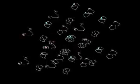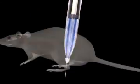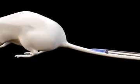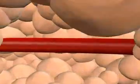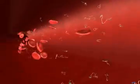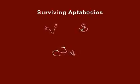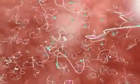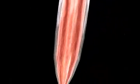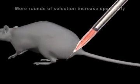Following recovery and purification, the surviving molecules are then amplified and administered to a healthy rat once again. Only the unbound or unabsorbed molecules within the bloodstream are recovered for continuous rounds of challenge in order to increase the number of molecules with the highest affinity and/or pharmacological activity against the disease or pathology of interest.